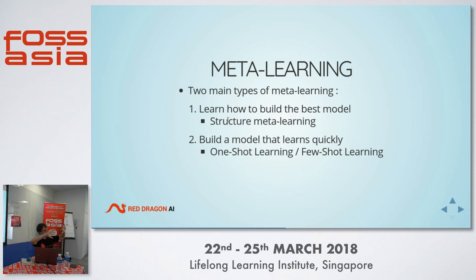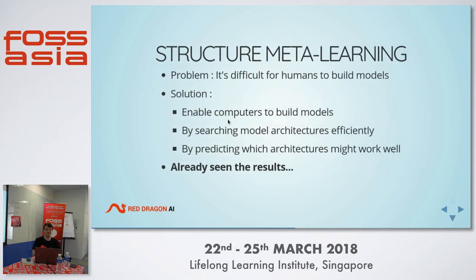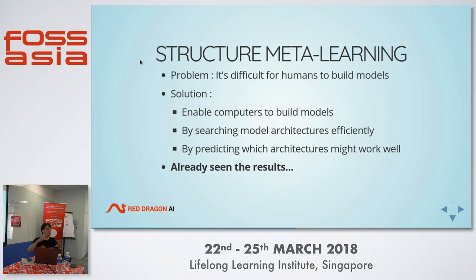The model will be pre-conditioned to want to learn stuff — not just fitted to the problem, but able to understand problems as quickly as possible. Structure meta-learning is about enabling computers to build models by searching architectures efficiently, guiding the search by predicting what architectures might work well based on a history of architectures tried. You've already seen the results of this — the NASNet. This is the original network built by one person, then Google and Microsoft engineers with ResNets, and now the NASNet defines the efficient frontier.